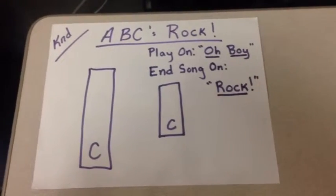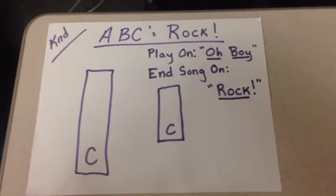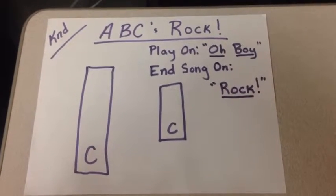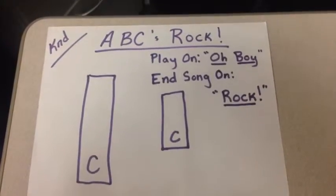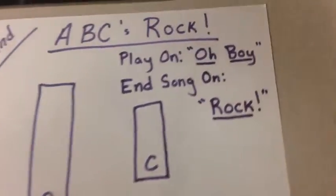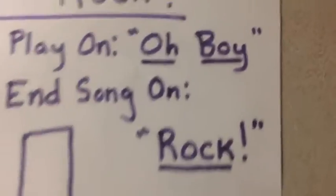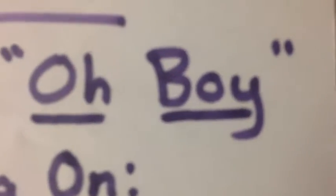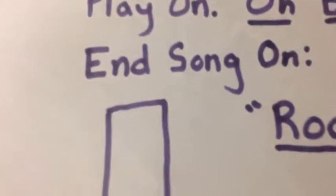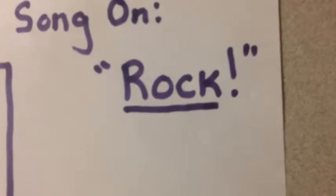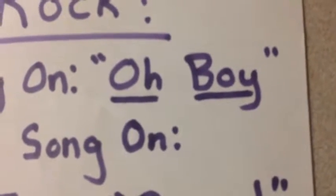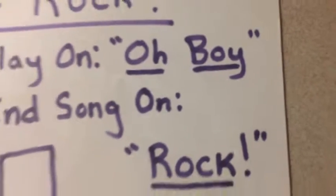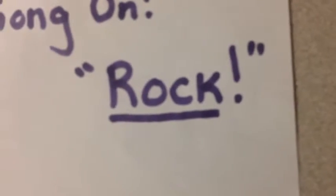Welcome to our YouTube channel Rock On Edu. Kindergarteners, we've got a song called ABC's Rock. The only time we're going to play is on the words 'oh boy' and at the very end we're going to end the song on 'rock.' So 'oh boy' would be two hits on the bell, and then 'rock' which happens only at the end would be once.